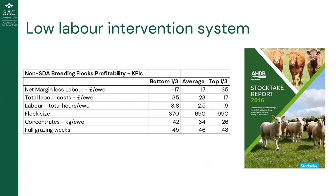This is reflected in stocktake data showing net margin profitability in 2016 — ranges significantly, largely driven by labor cost per ewe when properly costed. The top performing flocks use about two hours per ewe compared to the bottom third at four hours. The most profitable flocks actually didn't have more output — they were solely focused on generating lower labor input systems, forage-based with reduced variable costs in concentrate. An interesting KPI was 'full grazing weeks without feed' — those flocks had three more weeks without a feeding intervention.